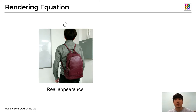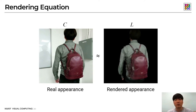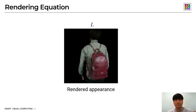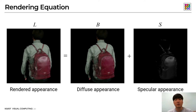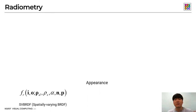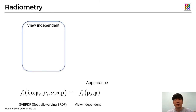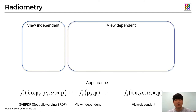Suppose we know the geometry and appearance of a 3D object and the environment illumination for lighting. Using the rendering equation, we can render the object synthetically. Following the rendering equation, this rendered appearance of the object can be divided into the diffuse appearance and the specular appearance. We can formulate the object's appearance using a spatially-varying reflectance function, separated as the view-independent component and the view-dependent component.